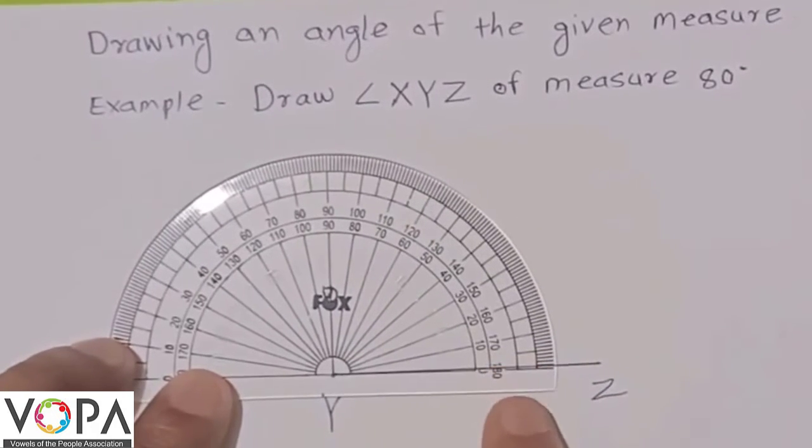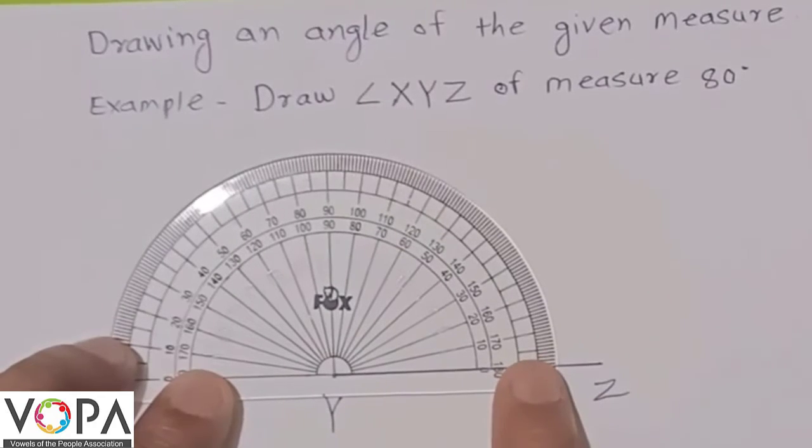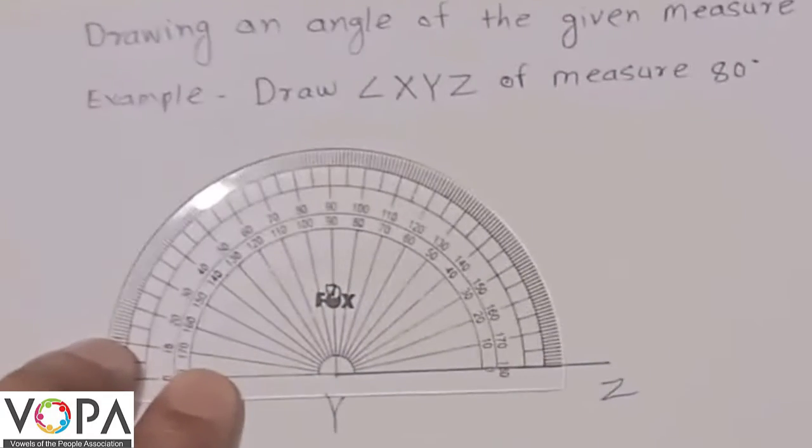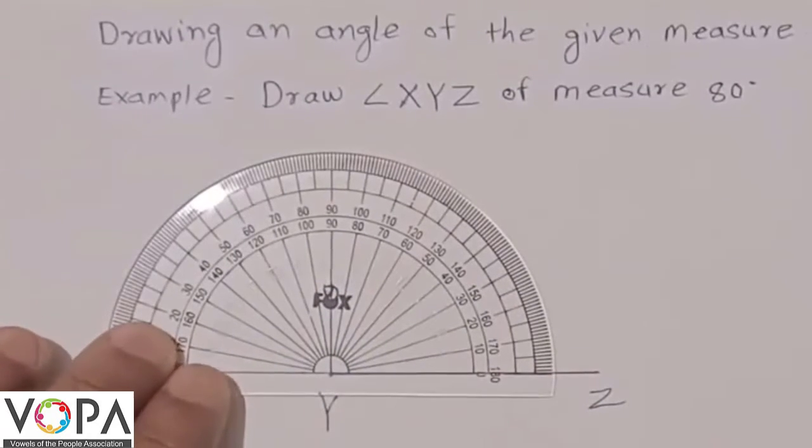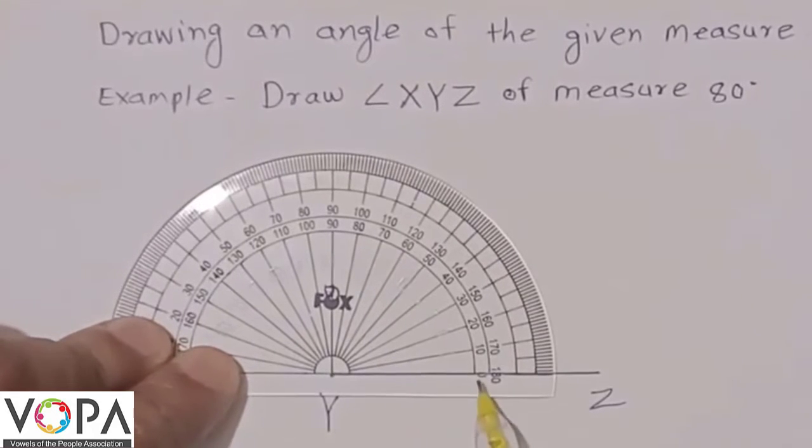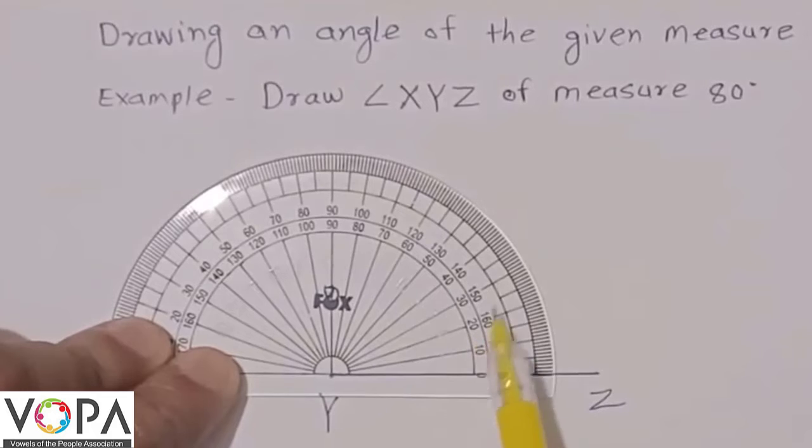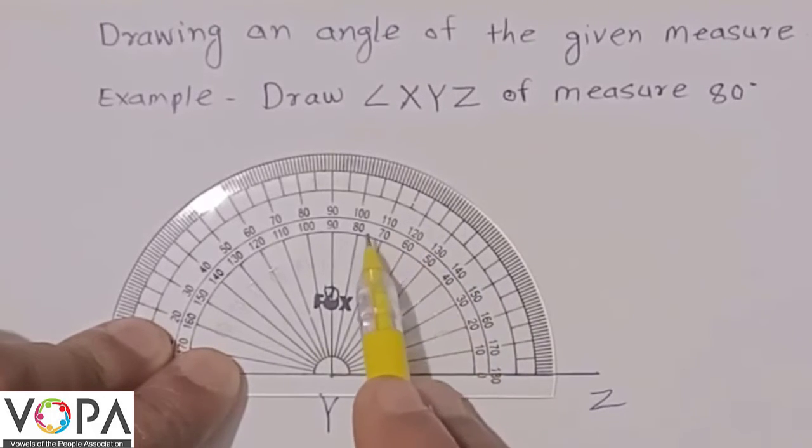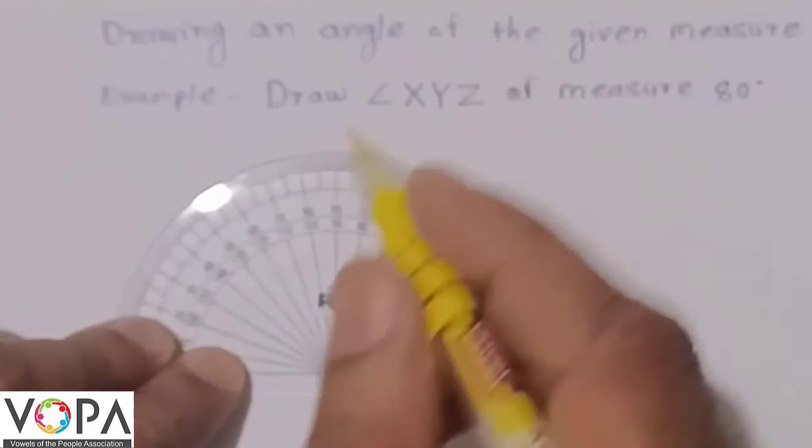Then count the divisions: 0, 10, 20, 30, 40, 50, 60, 70, 80, and mark the point where it shows 80 degrees.